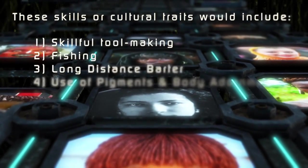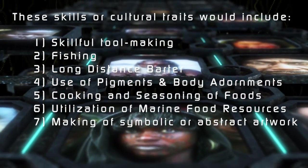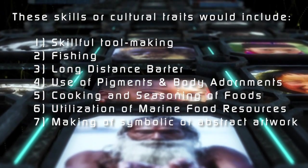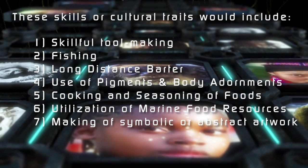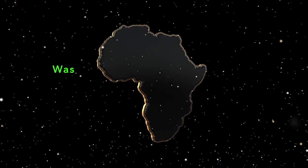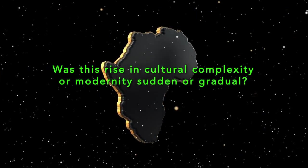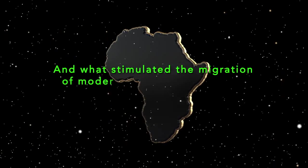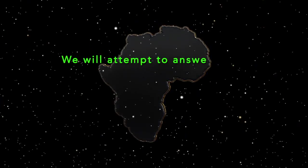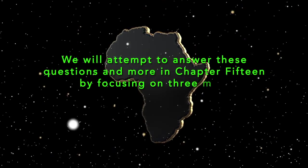These skills or cultural traits would include skillful tool making, fishing, and long-distance barter as well as the use of pigments and body adornments, the cooking and seasoning of foods, the utilization of marine food resources, and the making of symbolic or abstract artwork. Was this rise in cultural complexity or modernity sudden or gradual? And what stimulated the migration of modern humans out of Africa around the 60,000 year mark? We will attempt to answer these questions and more in Chapter 15 by focusing on three main points of interest.